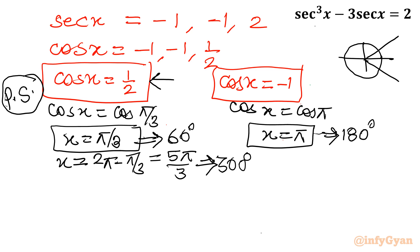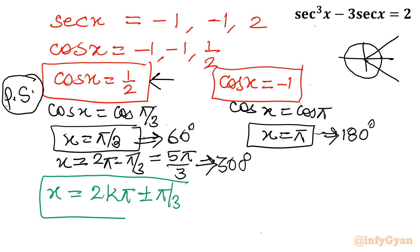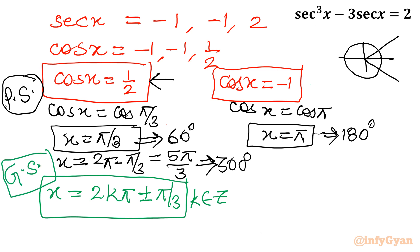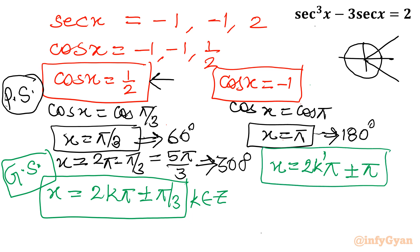For the general solution: for cos x = 1/2, we write x = 2kπ ± π/3, where k is an integer. For cos x = −1 (which is a double root from our factorization), we write x = 2k'π ± π, where k' is an integer. This gives an infinite number of solution points.